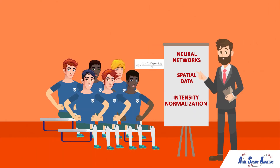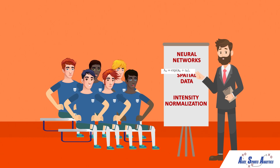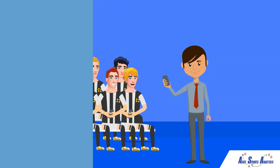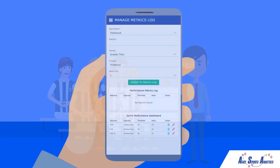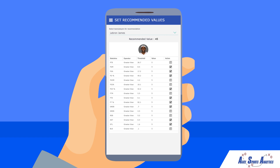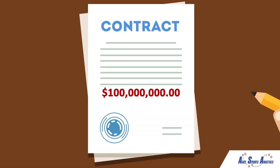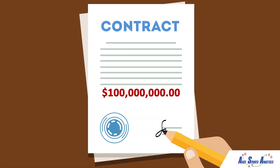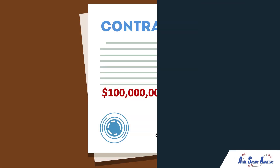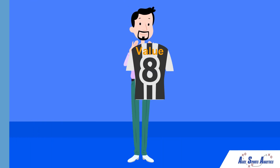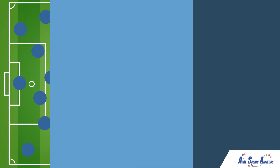The analyst for Team A struggles to explain analytics to the team, while the analyst for Team B easily communicates the value for each metric. The owner for Team A nervously signs player contracts and hopes it all works out, while the owner for Team B confidently acquires players who immediately add value.